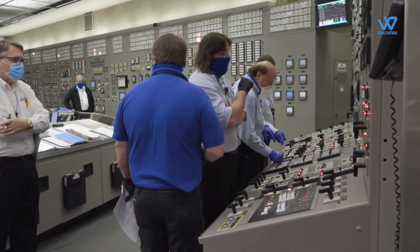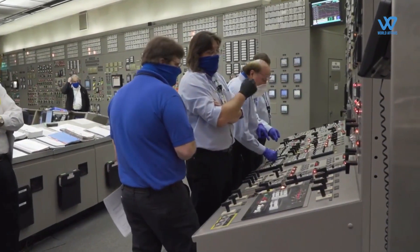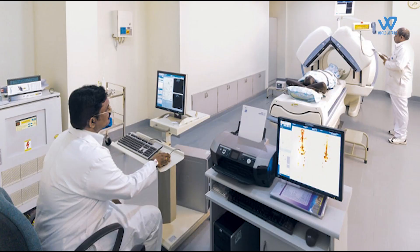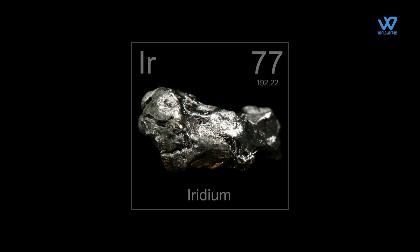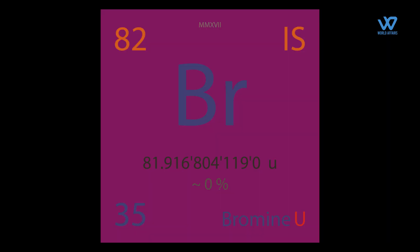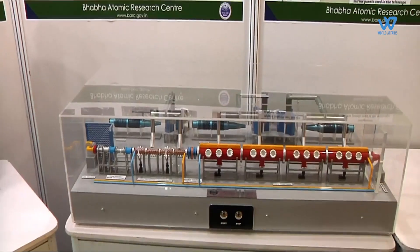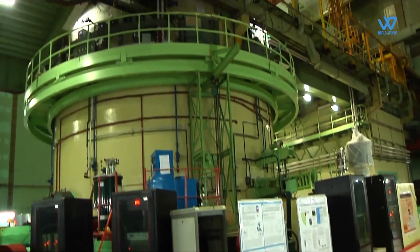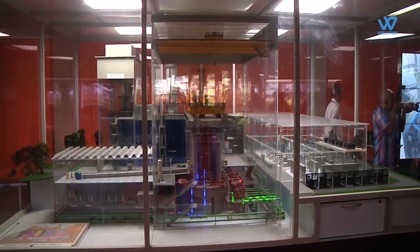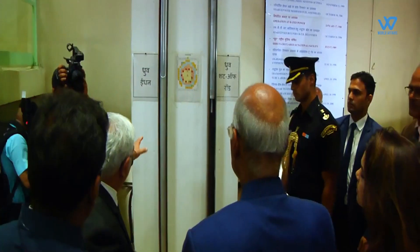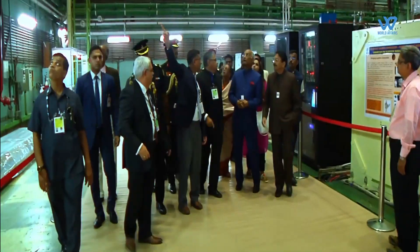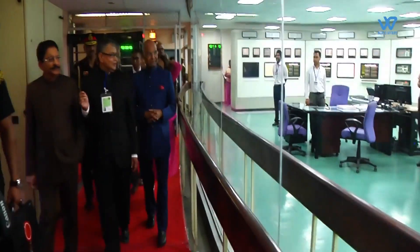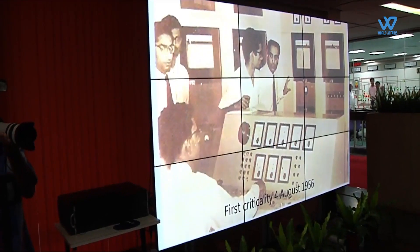The research reactor planned by BARC primarily has facilities for radioisotope production. Apart from medical radioisotopes, provisions are also made for producing radioisotopes for industrial use, such as cobalt-60, iridium-192, and bromine-82. The large scale and technology being deployed for the planned reactor will enable India to not only become a significant global player in the growing nuclear medicine market, but also have one of the most modern research reactors anywhere in the world.